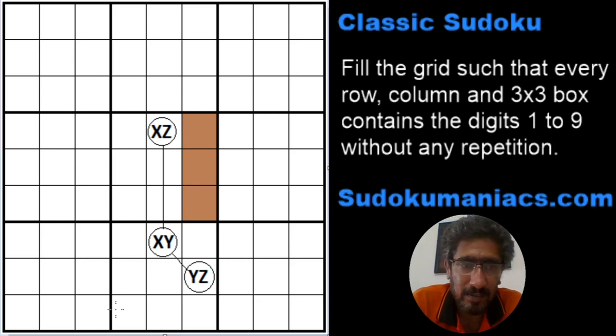Now let's assume that all these three are obviously different digits. So how do we use this information? Basically, the cell where X and Y are present is known as the pivot of the point, and the cells which are at the extremes are known as the wing ends.